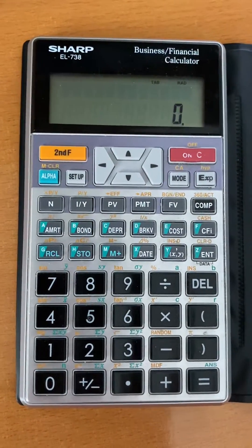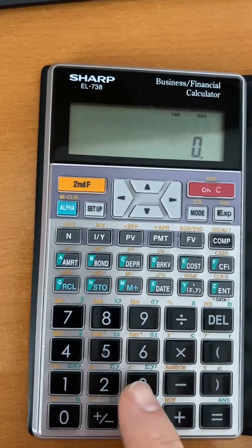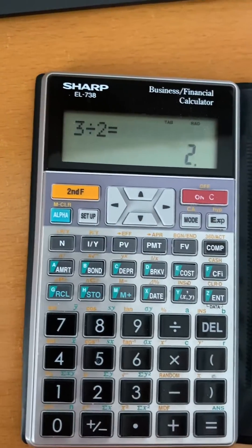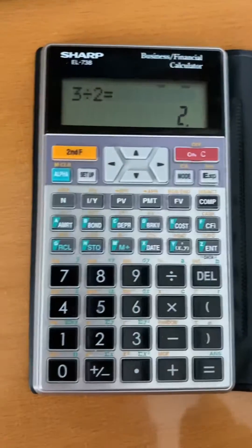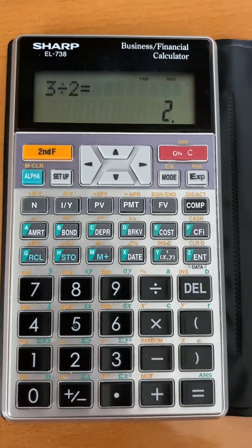This is how it's currently set up. I'll demonstrate: three divided by two equals two. Obviously that's not accurate. It has zero decimal places displaying right now, so 1.5 is being rounded up to two. I do not like this.